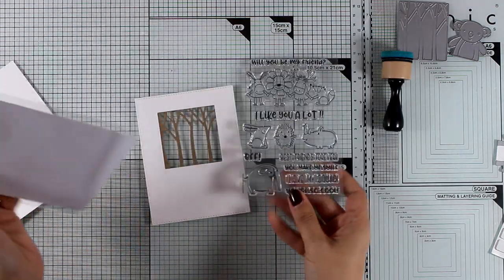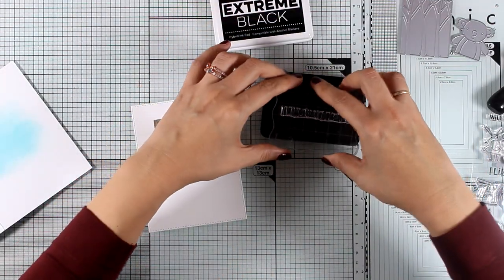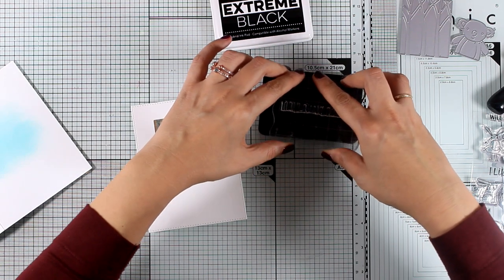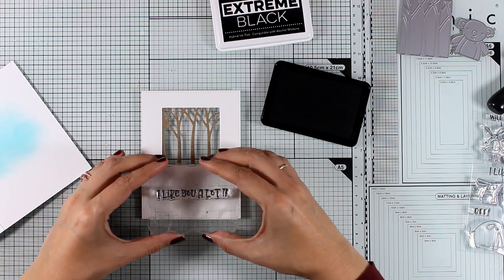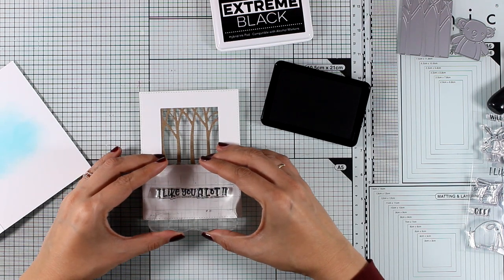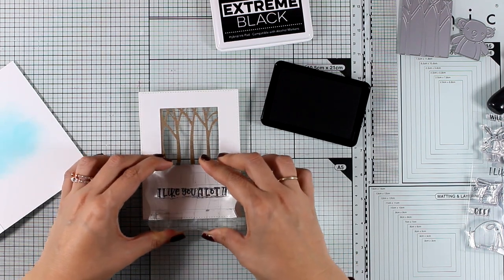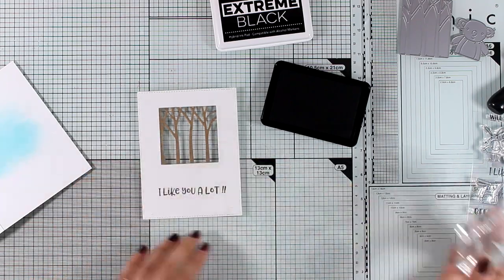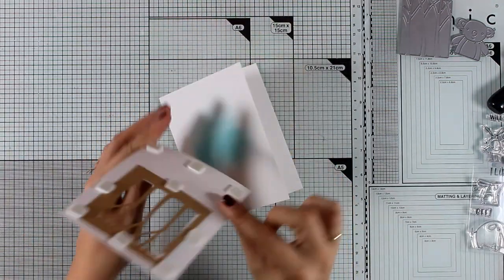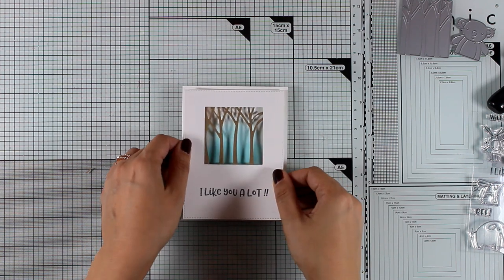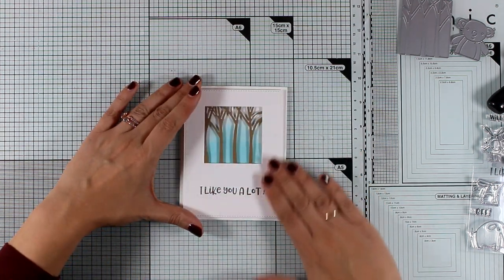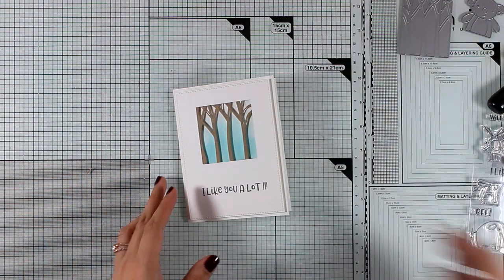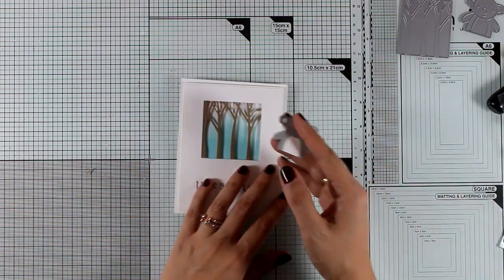I will have to stamp now my sentiment, and for that I'm using the Best Friends stamp set, and I'm going to stamp with Extreme Black ink on top of my card base. And I went with the sentiment that says I Like You a Lot. I have some foam squares at the back of my panel. I'm going to stick that on top of my card base, and I have my little window ready to go. All I need to do now is to stick the little koala on top.